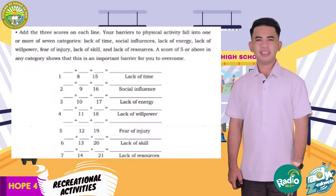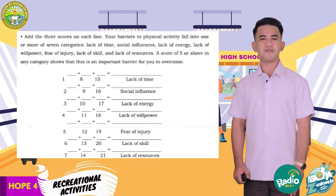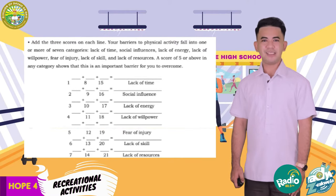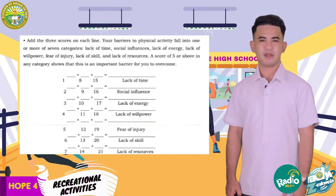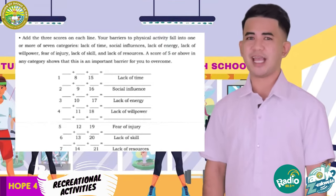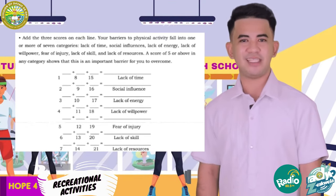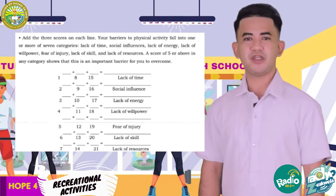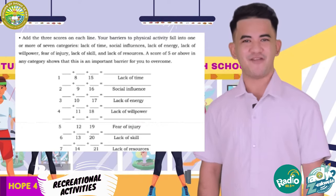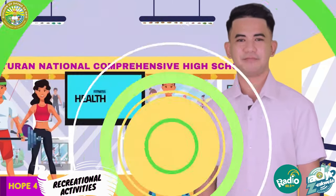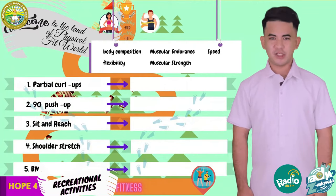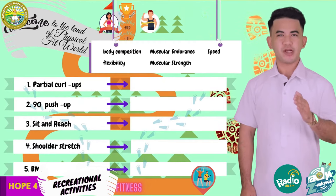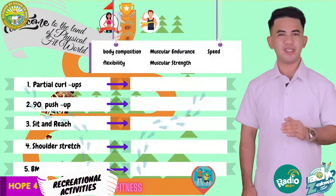Now analyze your answer. Enumerate your top three reasons for not engaging in regular physical or recreational activity. Devise or think of a solution for alternative activities to counter these factors from hindering you from engaging in a fitness activity. Let's go harder! By doing the recreational activity trek and by reviewing what you learned in your junior high school PE class.